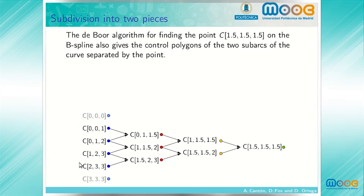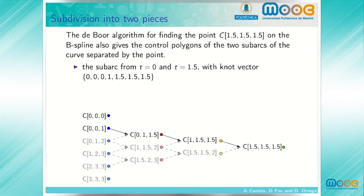We have this representation. We start with four points that come from the control polygon of the original curve, and applying the DeVore algorithm, we get three points in the first stage, two points in the second stage, and the last point of the DeVore algorithm. The sub-arc from t equals 0 to t equals 1.5 will have a control polygon given by these two points and these three points obtained from the DeVore algorithm.